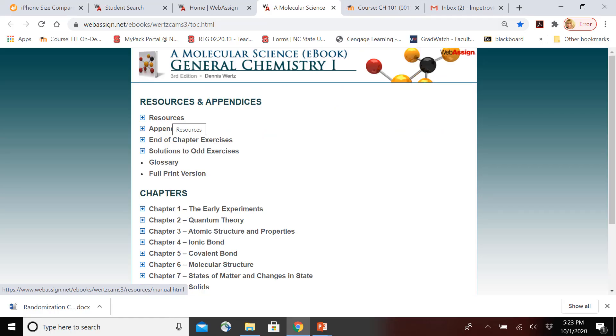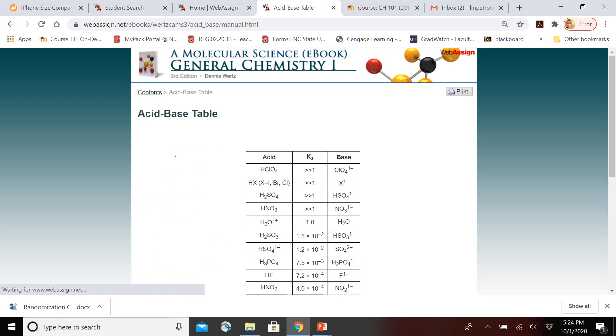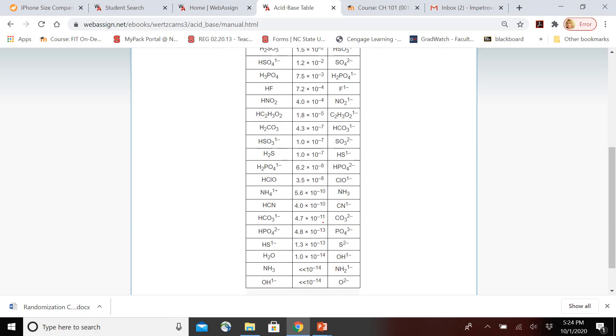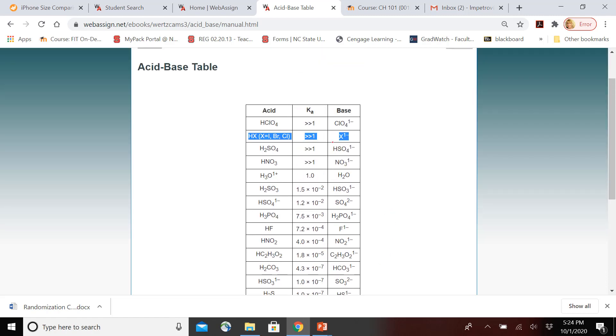If we go to our resources in the textbook and open our acid base table, remember that strong acids are on the upper left and strong bases are on the lower right. So we can see that chloride, bromide, and iodide are very high up the chart and in the weak base region. Whereas fluoride is further down on the right side and a stronger base.